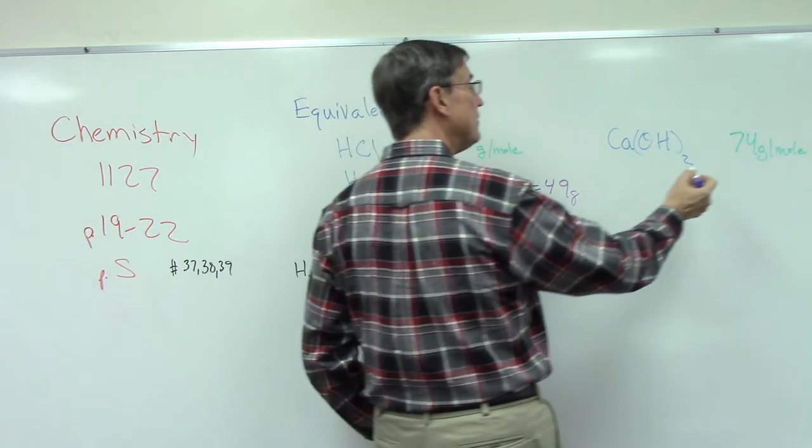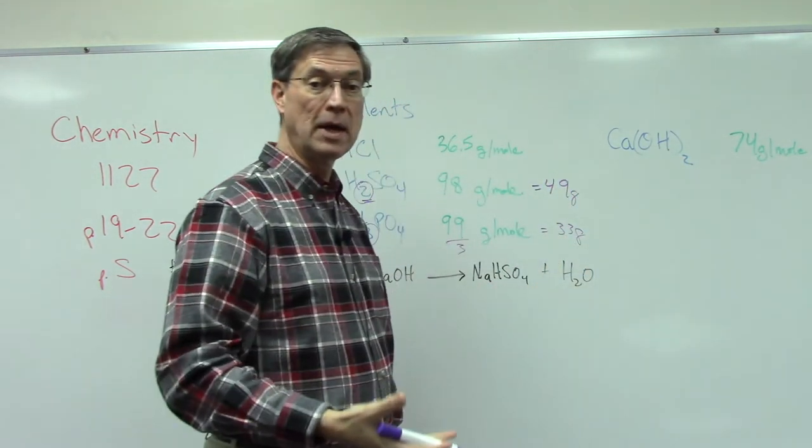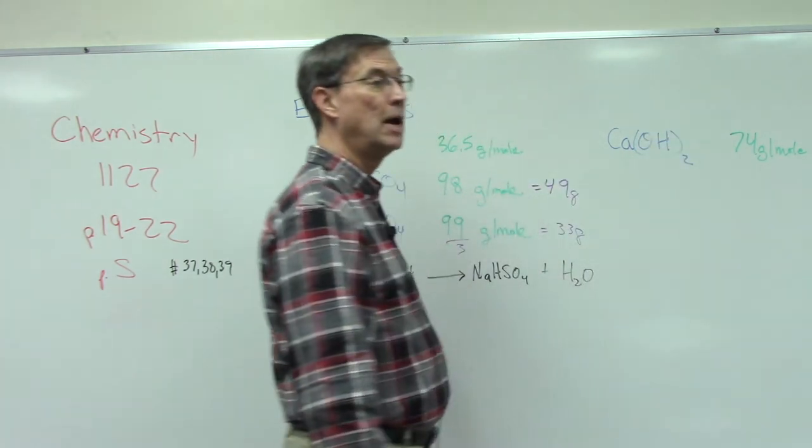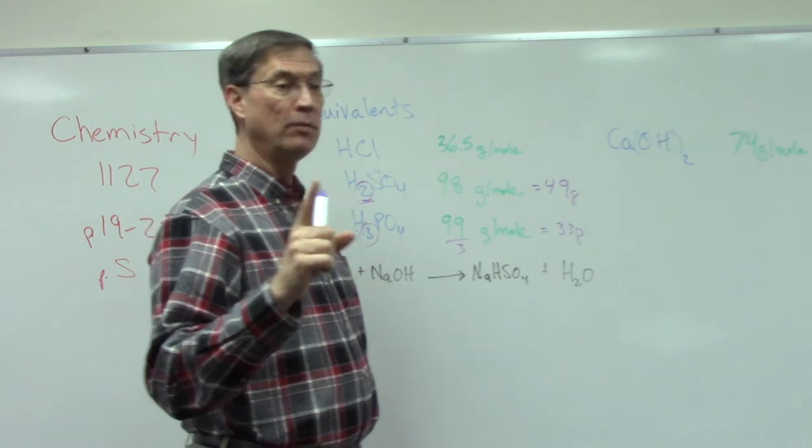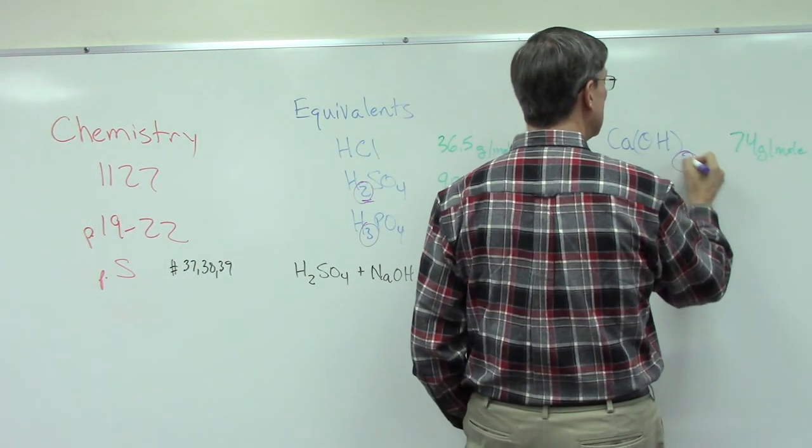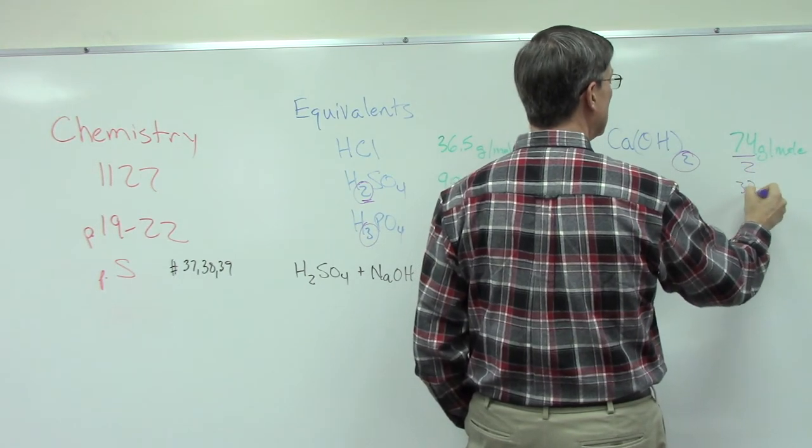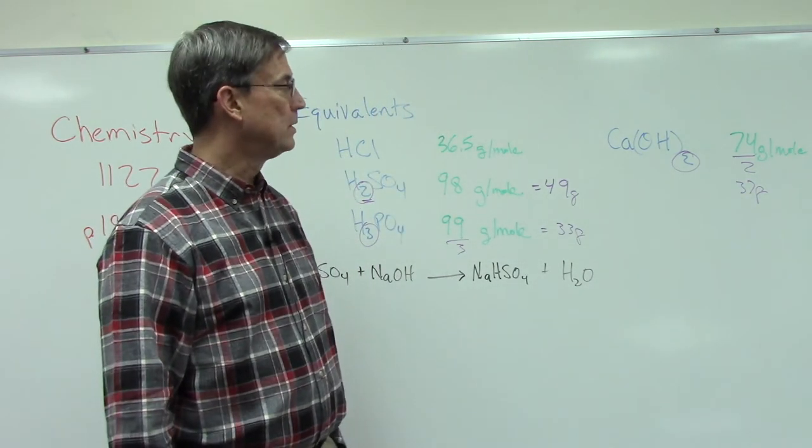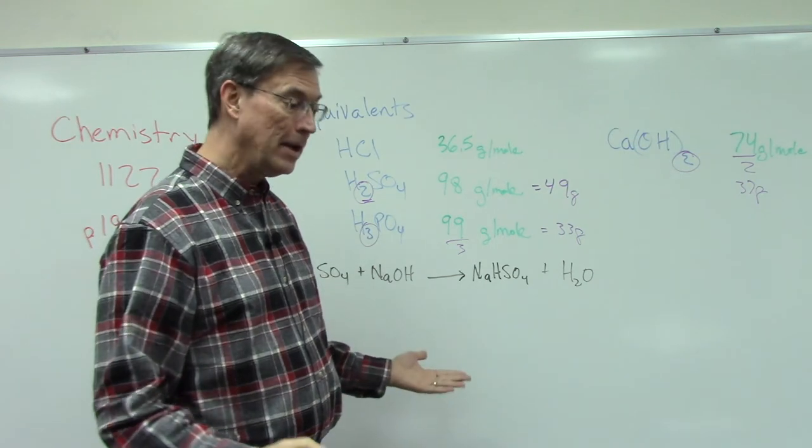So if I have 74 grams, which is one mole of calcium hydroxide, and I dissolve it, I actually have two equivalents. So if I only want one equivalent, then I actually have to take this and divide by two. So 37 grams would give me one equivalent of the base.